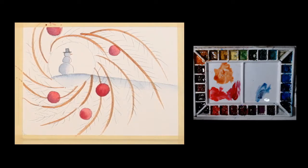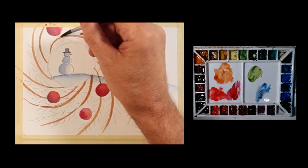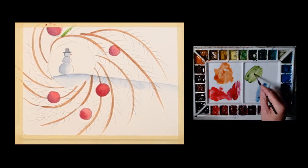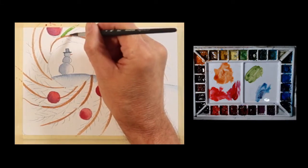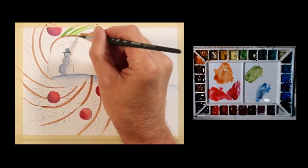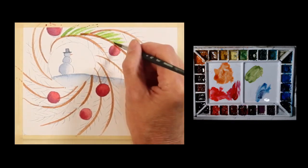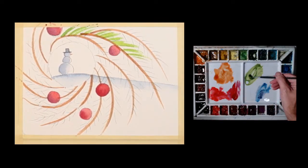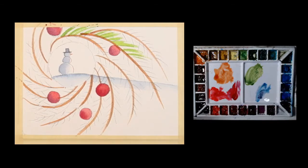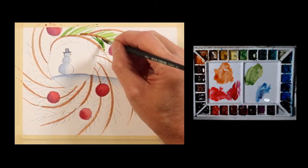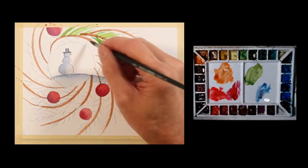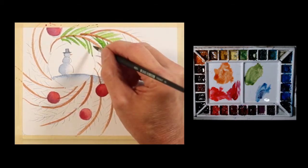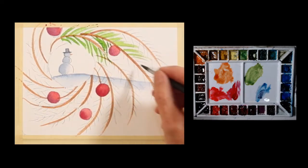So next, this is a number six round brush that I have. I'm taking sap green, pretty much as it is. It'll do the job for what I want to paint. I need to make sure there's enough moisture in my brush, but not too much. Now I'm going to paint these pine needle marks on this.